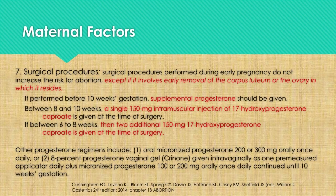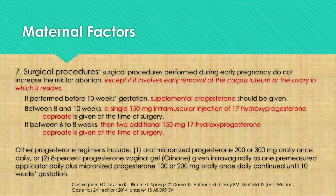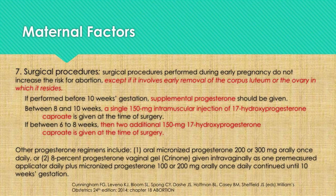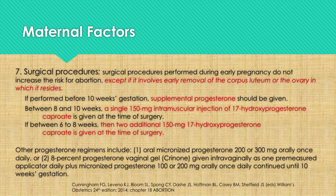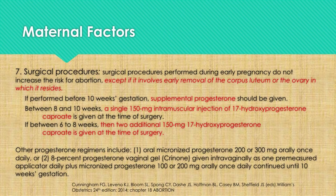Also included in maternal factors are surgical procedures. Surgical procedures performed during early pregnancy do not increase the risk of abortion except if it involves early removal of the corpus luteum or the ovary in which it resides. If performed before 10 weeks AOG, we have to give supplemental progesterone. Between 8 and 10 weeks AOG, a single 150 mg intramuscular injection of 17-hydroxyprogesterone caproate is given at the time of surgery. If performed between 6 to 8 weeks, then two additional 150 mg doses of 17-hydroxyprogesterone caproate are given. Other progesterone regimens include oral micronized progesterone or an 8% progesterone vaginal gel.